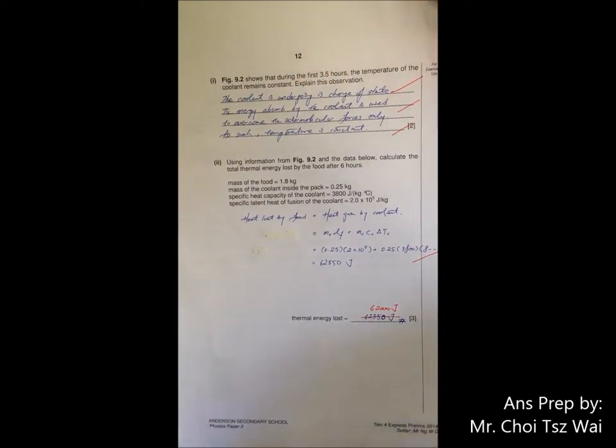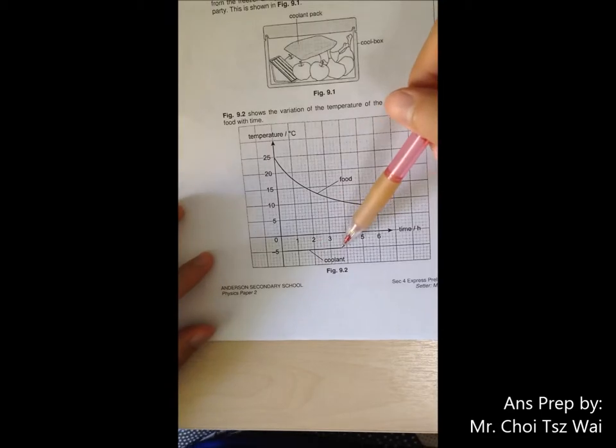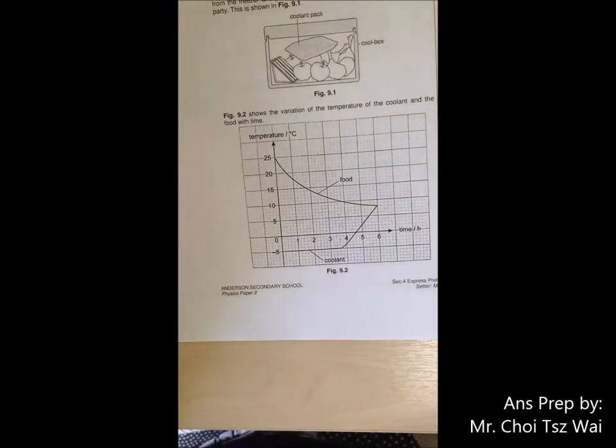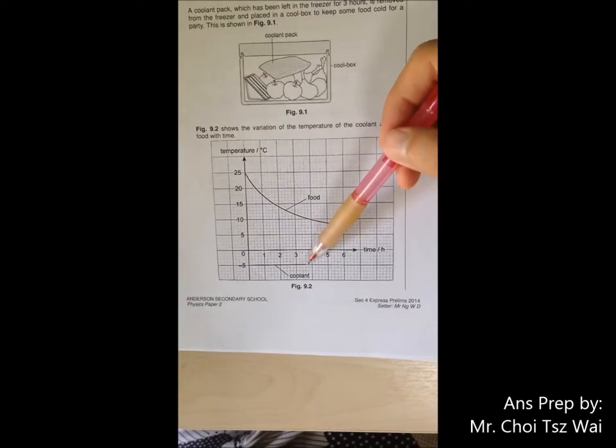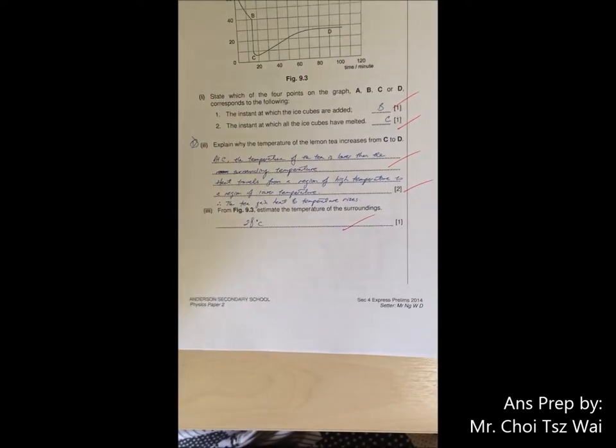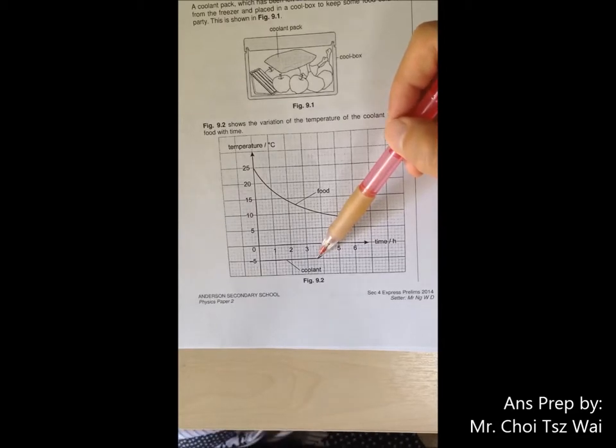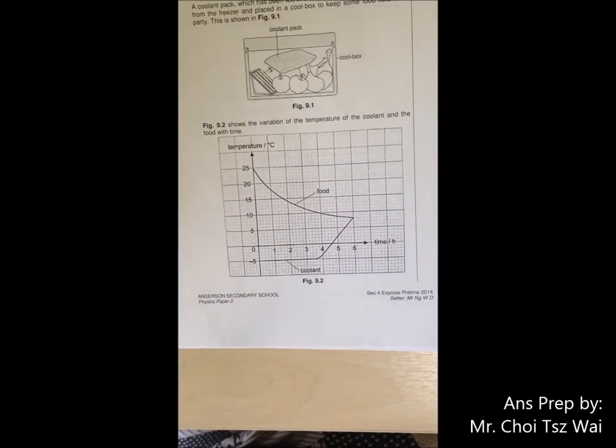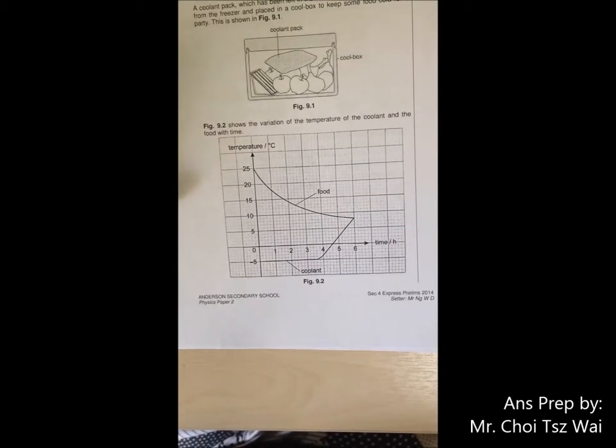You are asked why is it the first 3.5 hours the thing goes constant. So they're asking you why is this constant. In your syllabus there can only be one possibility, a change of state. Whenever there's a change of state there will be constant temperature. The question is a 2 mark question. Even though it's a 2 mark question, you have to give a short explanation why the temperature is constant. Don't just stop at oh because it's changing state. Unless it is a 1 mark question, so be specific.